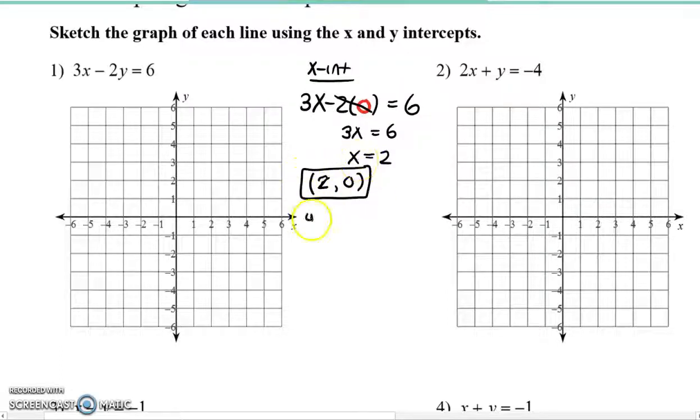Next for y-intercept, we're going to do the same thing except we're going to plug in zero for x. So it's going to be three times blank minus 2y equals 6. I'll bring in that red zero in there just to emphasize the importance of that substitution. So you're left with negative 2y equals 6. Divide both sides by negative two. That's going to give us negative three. So the other point is going to be zero comma negative three.